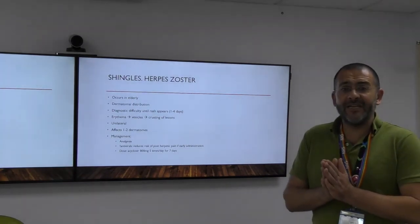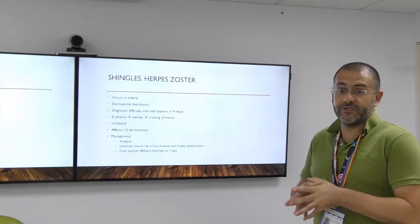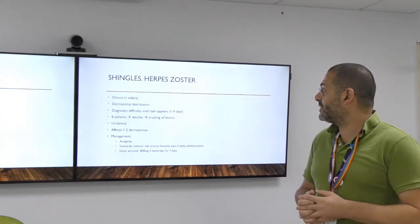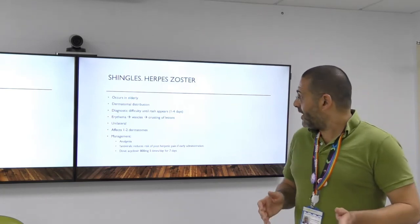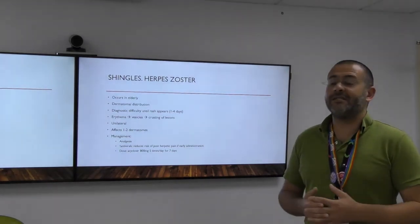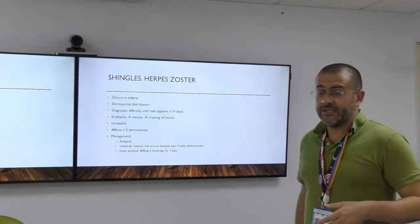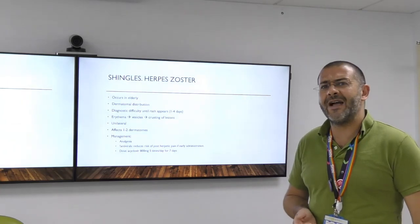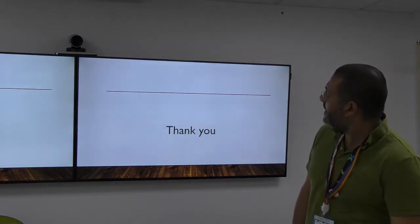Another cause that can be difficult to diagnose if the patient presents early is herpes zoster, or shingles. This usually occurs in the elderly, is dermatomal in distribution, and diagnosis is difficult in the first one to four days before the erythema, vesicles, and crusting appear. It is usually unilateral, affecting one to two dermatomes. Give analgesia, and if they present early make sure you give antivirals — acyclovir 800mg five times a day for seven days. Thank you.